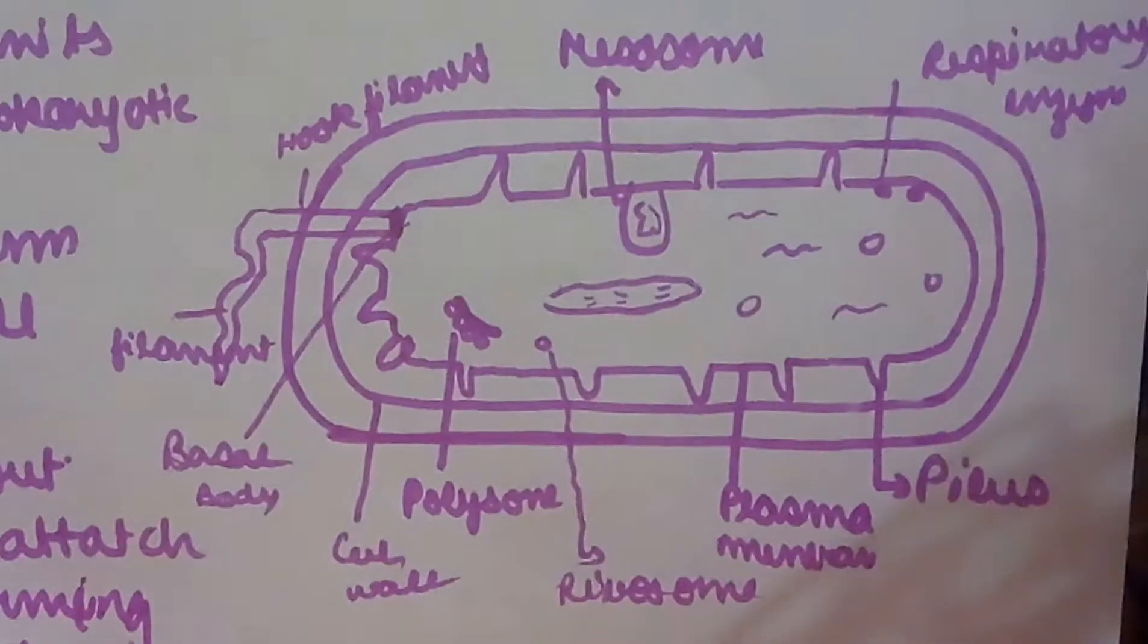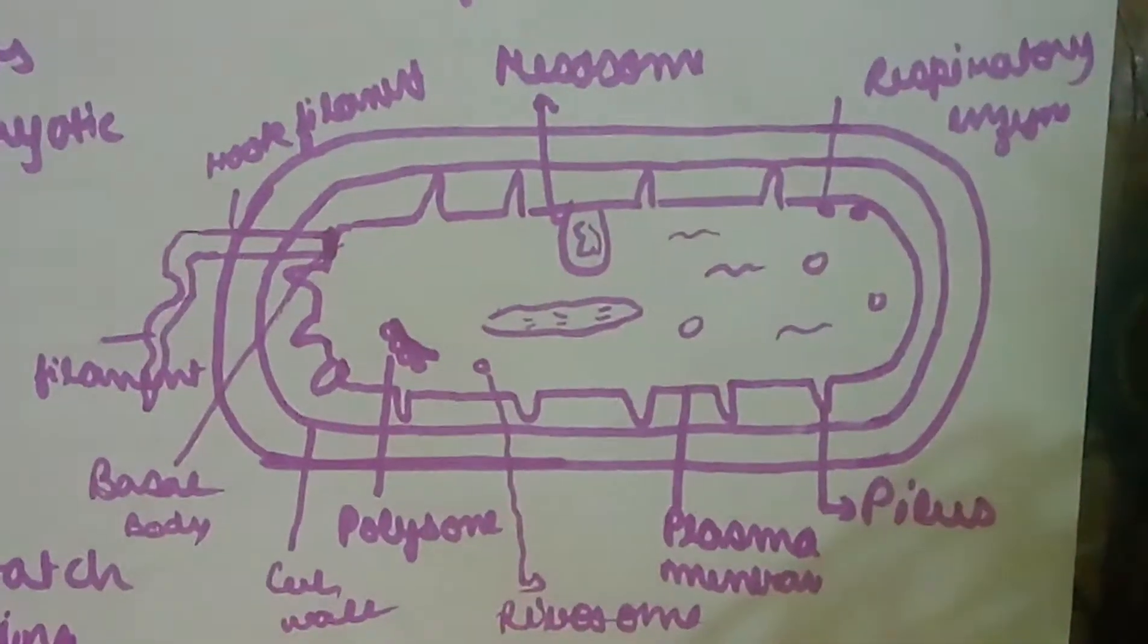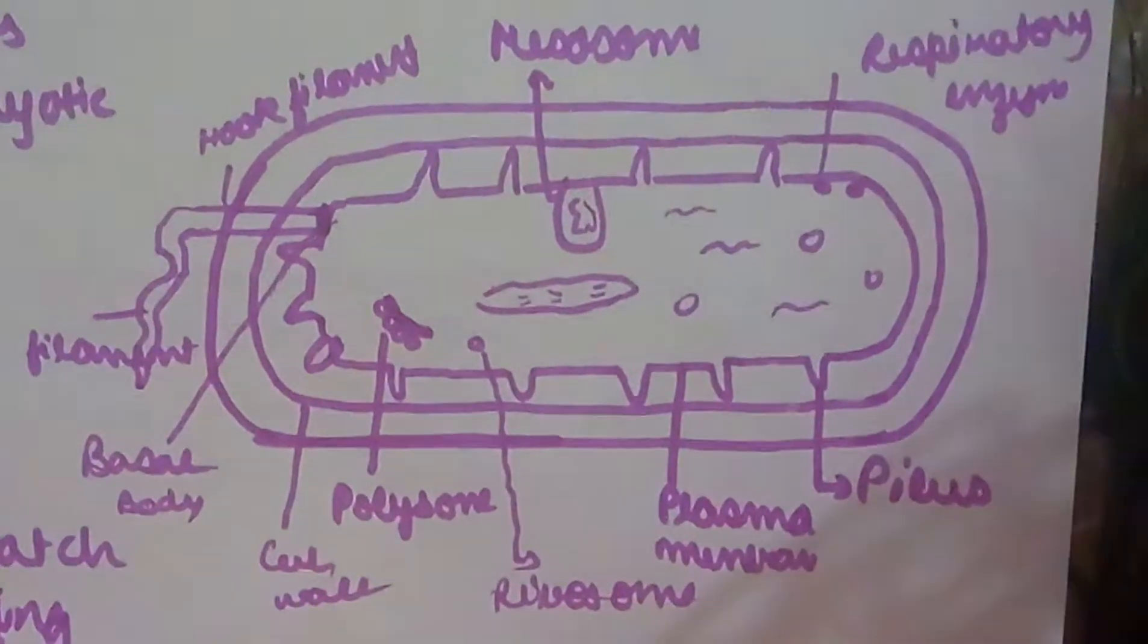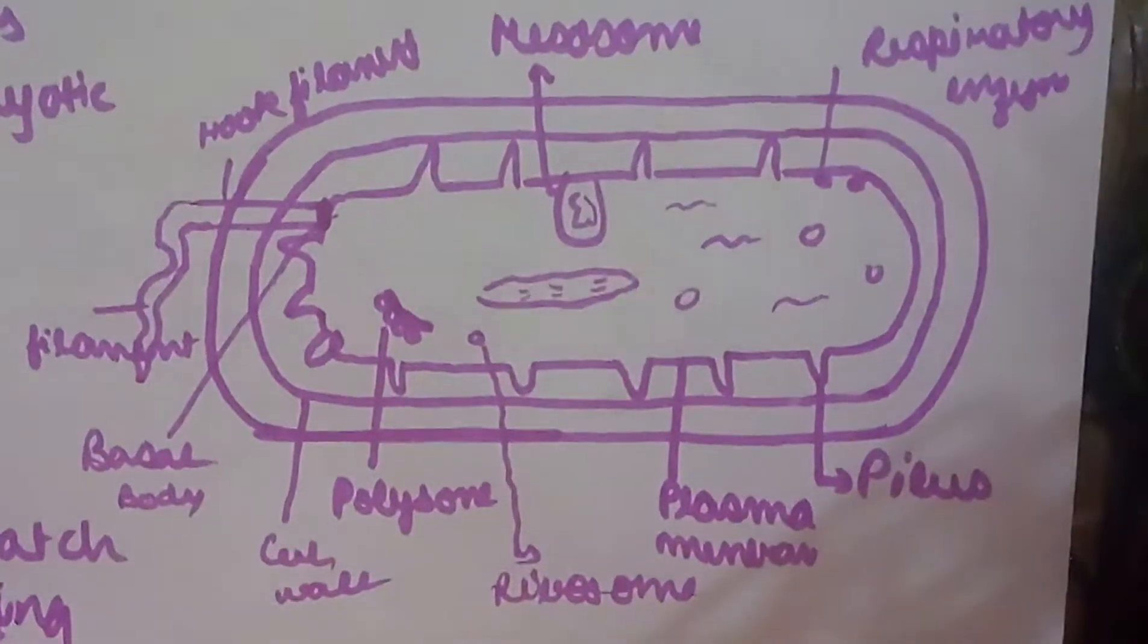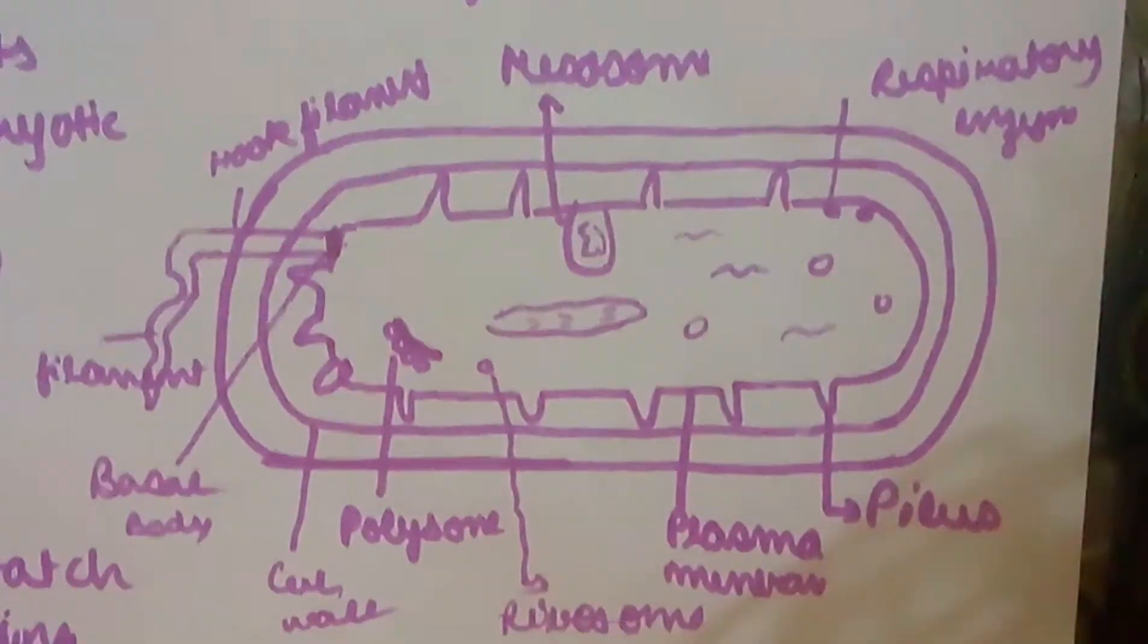the diagram. We can see the hook, we can see the filament. We had already read that the filament is the longest part. You can see the basal body - it's basal, so obviously it will be lower.